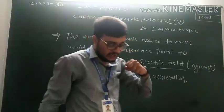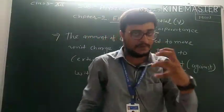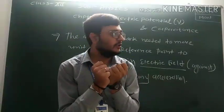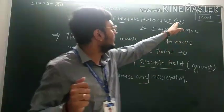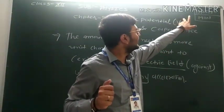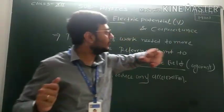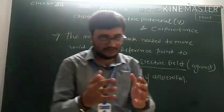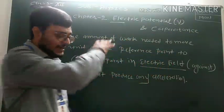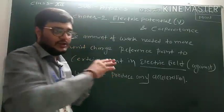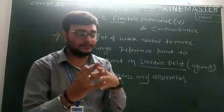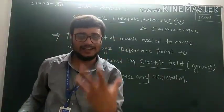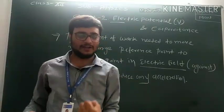The symbol of electric potential is capital V and it is a scalar quantity. We are not taking any vector here. The difference is that electric potential is a scalar quantity while electric field is a vector quantity.